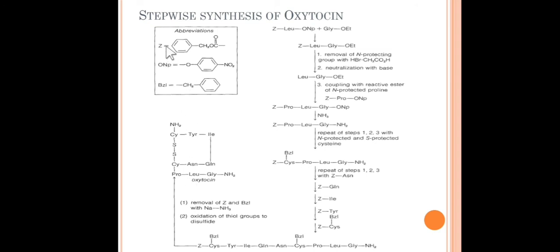These are the abbreviations for the protecting groups. Z is for CBZ, that is carbobenzyloxy. O-NP actually is in the form of a para-nitrophenol ester. This is the R group of ester or O-R group of ester, and benzyl you know is a simple CH2-Ph.